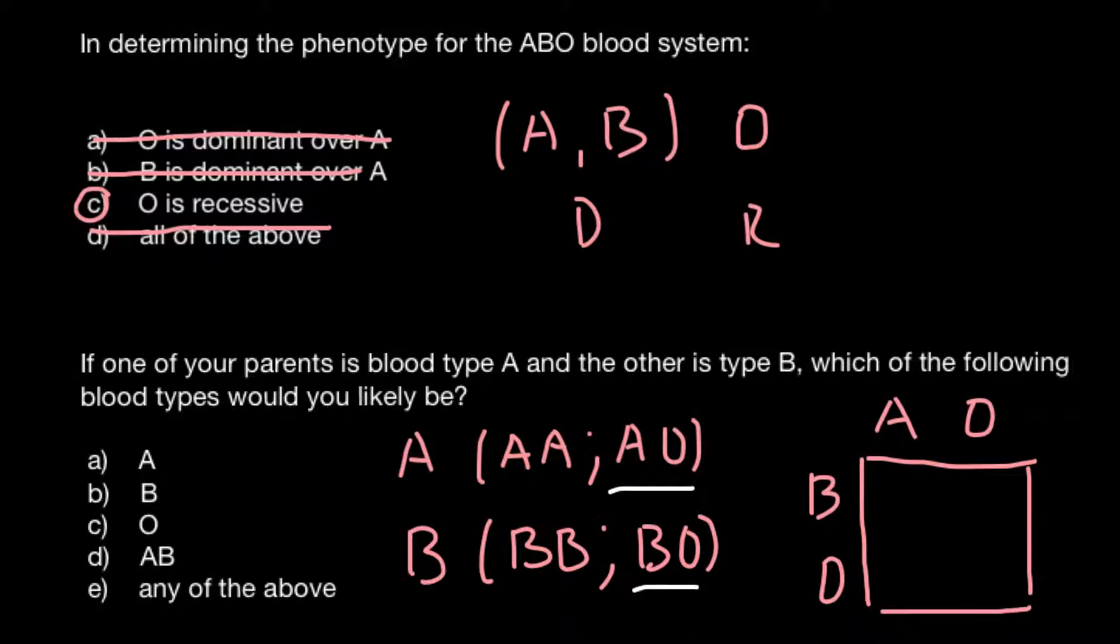As you see, the possible genotypes would be AB, and this is blood group AB - so this is AB, answer D. Another one would be BO, and this is blood group B, answer B.